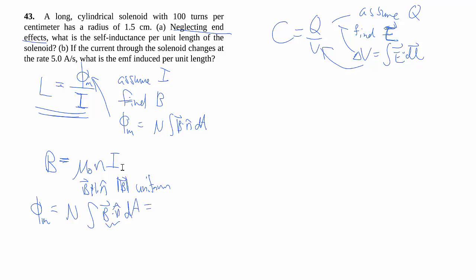The B basically comes right out, so you have NB integrating the area, so you have NBA where your A is πR² having a circular cross section.